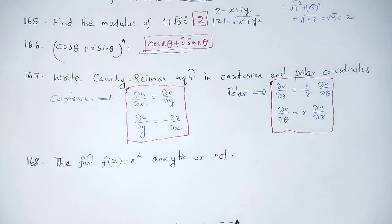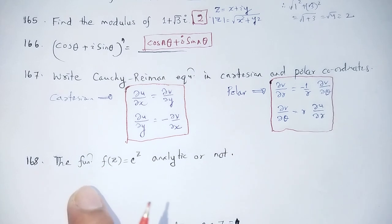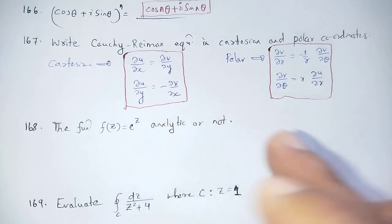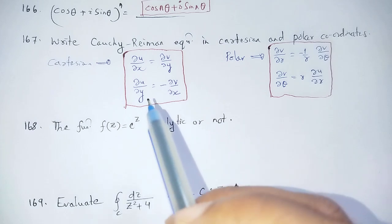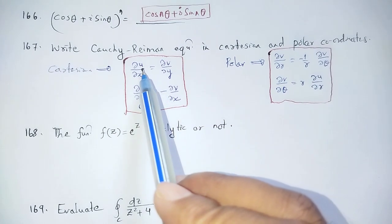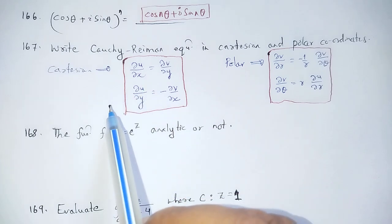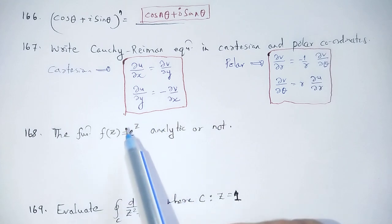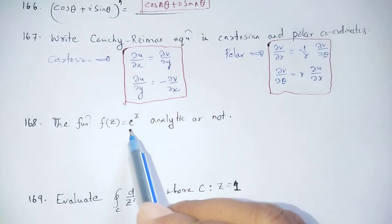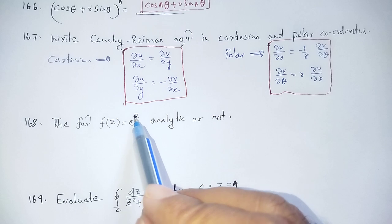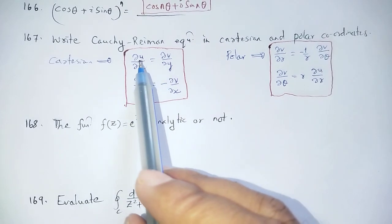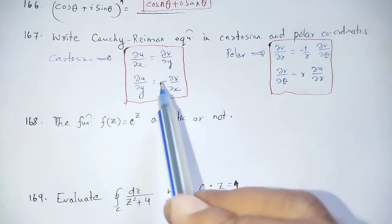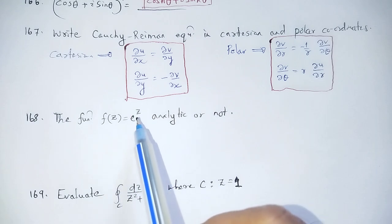Is the function f(z) = e^z analytic? We will prove analyticity by checking the Cauchy-Riemann equations. We verify that ∂u/∂x = ∂v/∂y and ∂u/∂y = −∂v/∂x. With z = x + iy, the partial derivatives satisfy the CR equations, so e^z is an analytic function.